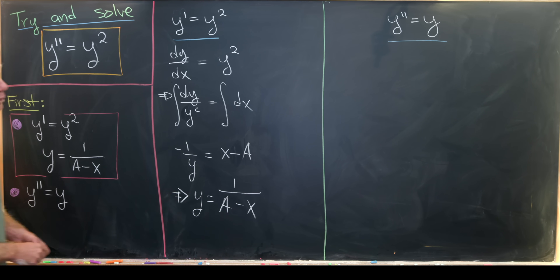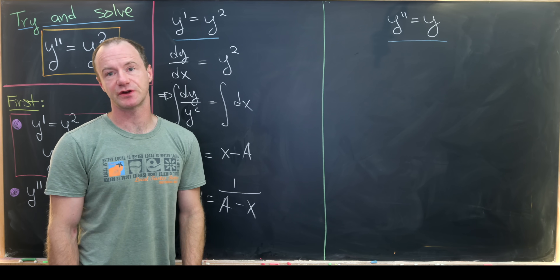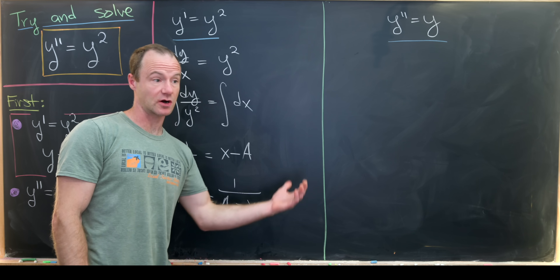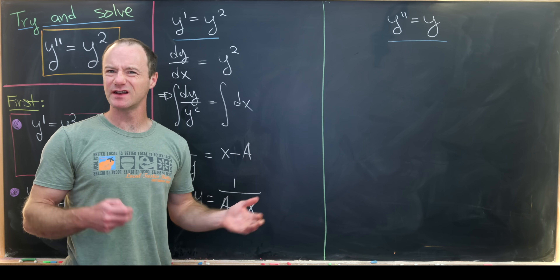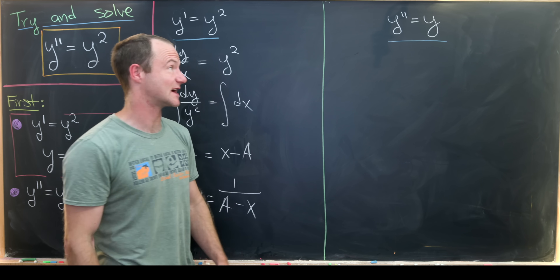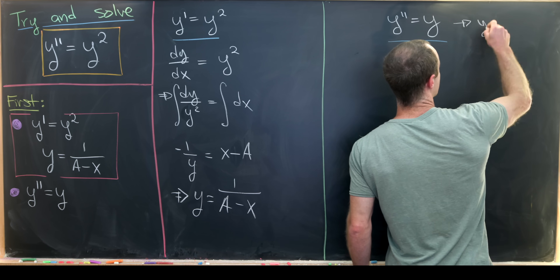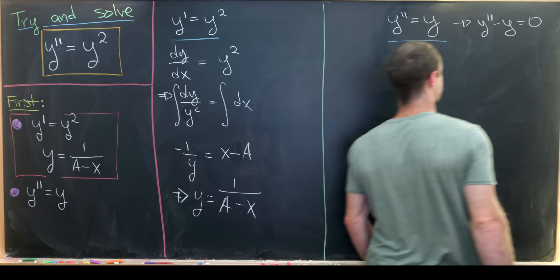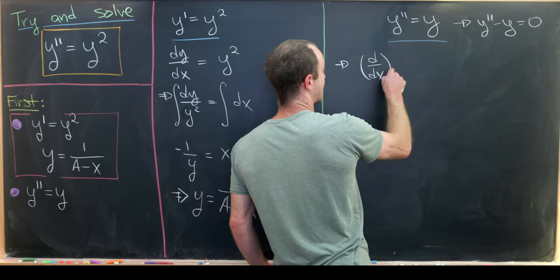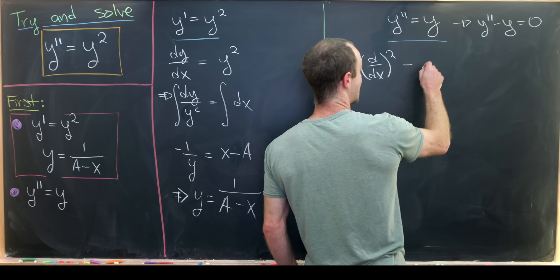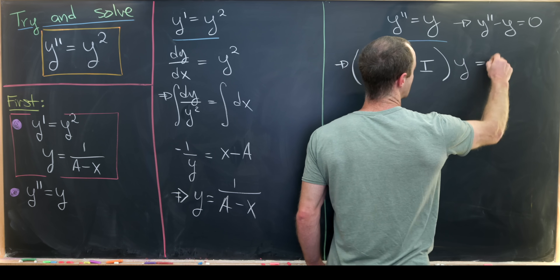Let's move on to the second one: y double prime equals y. There's a fairly standard way to solve this using the theory of linear second-order homogeneous differential equations with constant coefficients. That being said, we're going to do something a little more from scratch. We take this differential equation and rewrite it as y double prime minus y equals zero, then rewrite that as the differential operator — the second derivative with respect to x minus the identity operator I — evaluated on y equals zero.